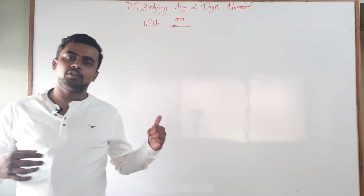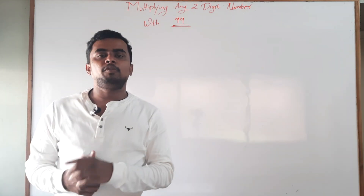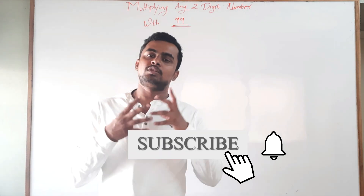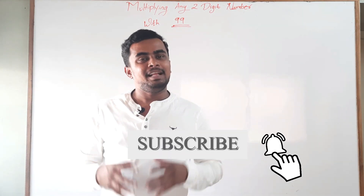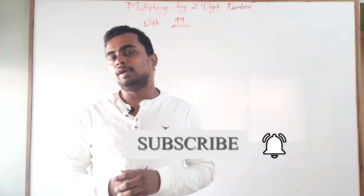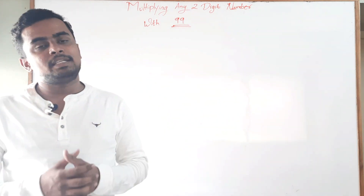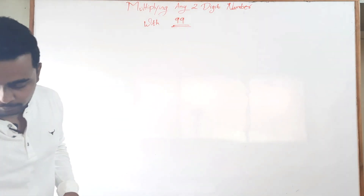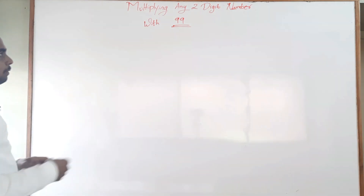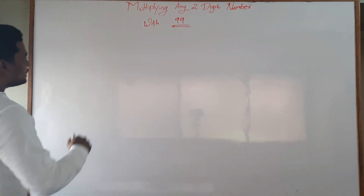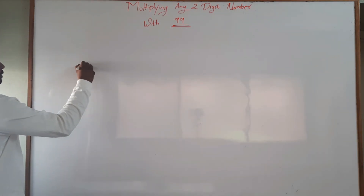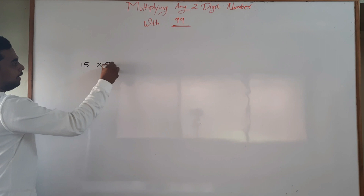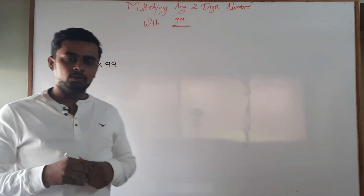Without any further ado, let's start with the video. But before that, I would like to ask you all to subscribe to my channel and like this video — let's keep a target of 20 likes. So let us start. We'll begin with smaller two-digit numbers; let's take the number 15 multiplied by 99.